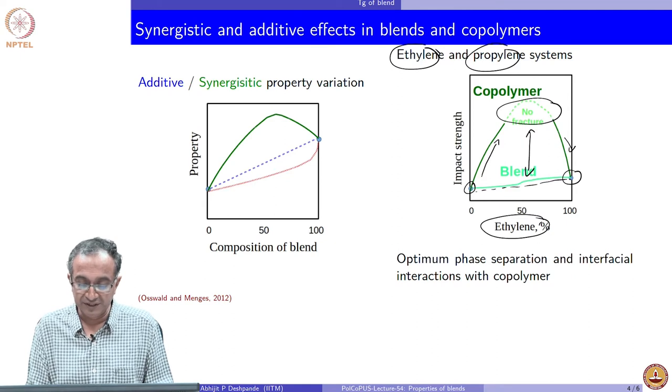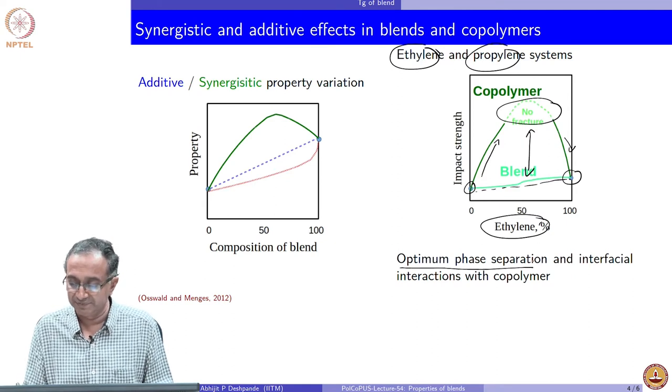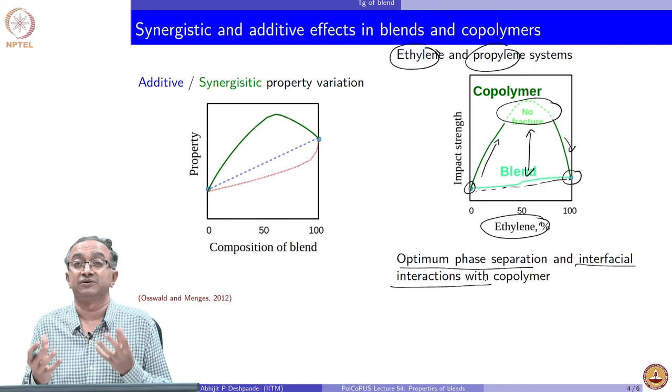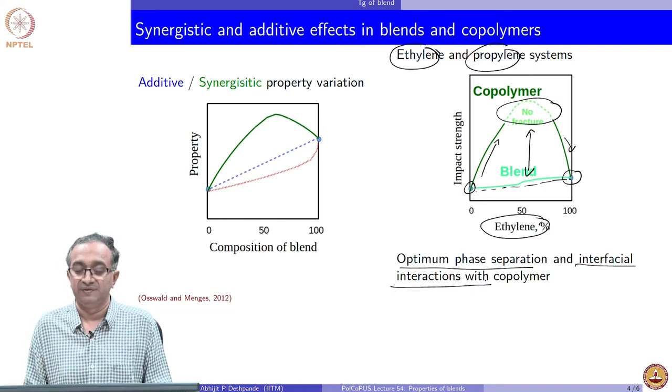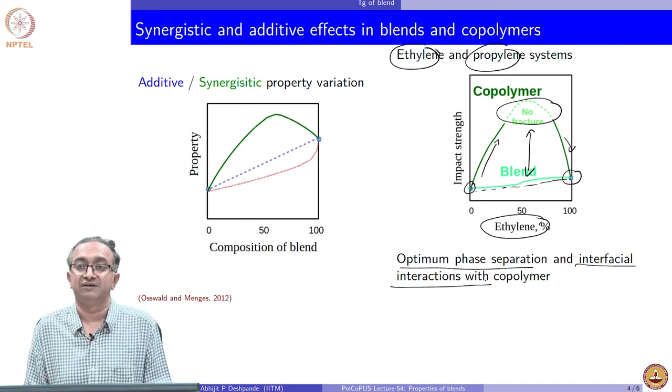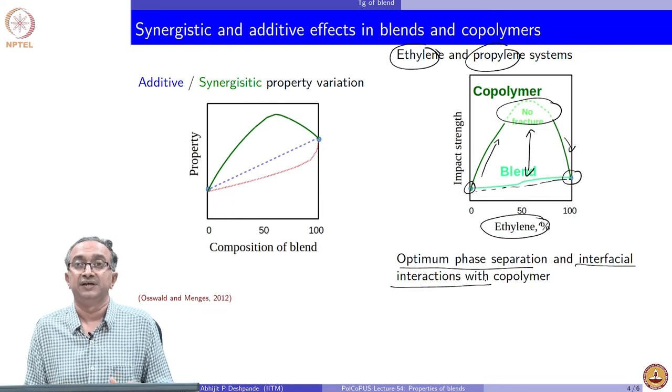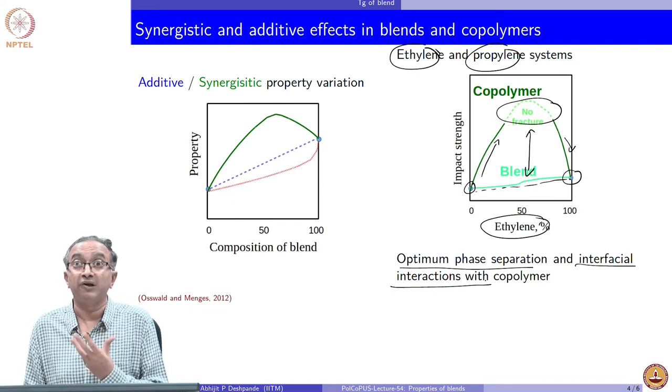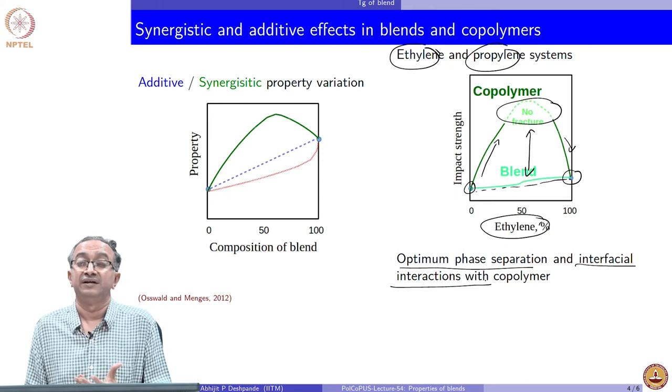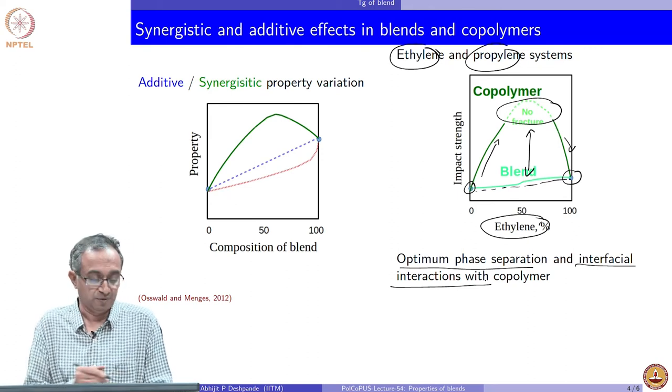What in the end we have is optimum phase separation and interfacial interactions between the phase separated domains that gives us this very synergistic improvement in properties. That is why ethylene-propylene copolymers are used quite often in terms of their impact resistance properties.